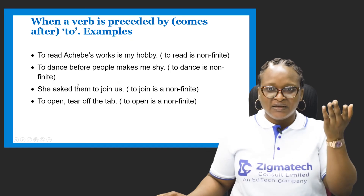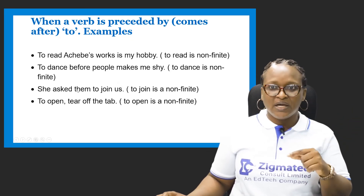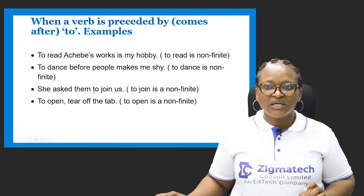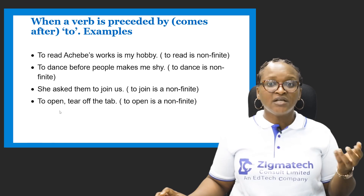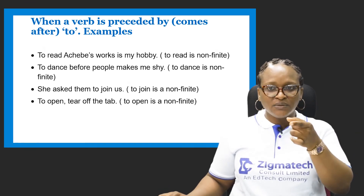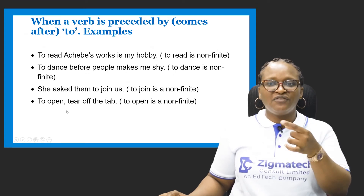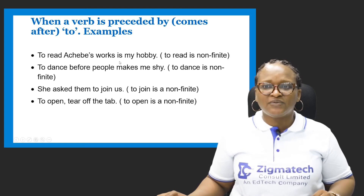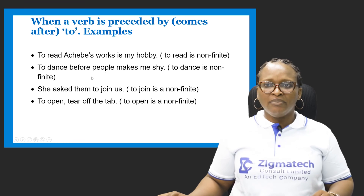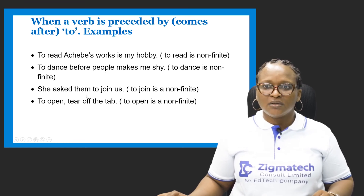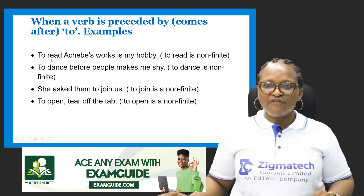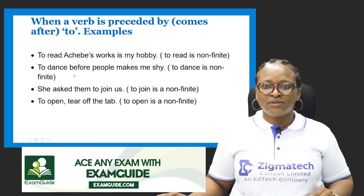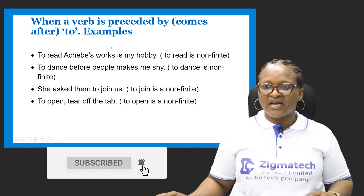Another example: 'To open, tear off the seal' — 'to open' is non-finite and 'tear off' is the phrasal verb making the sentence meaningful. Without the finite verbs — works, makes, asked, tear off — these cannot be referred to as complete sentences. Because we have the finite verbs, we can refer to these sentences as complete sentences.